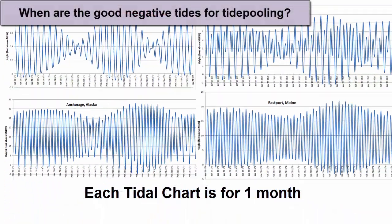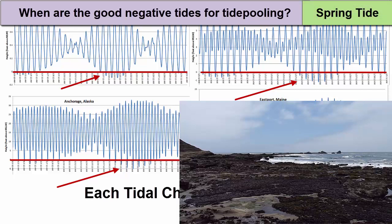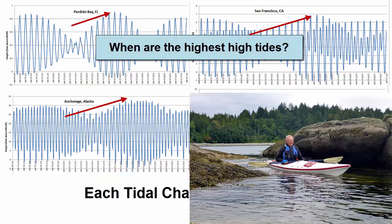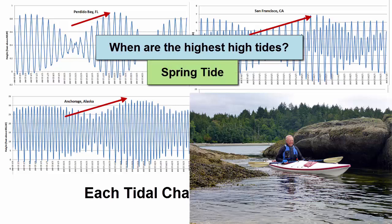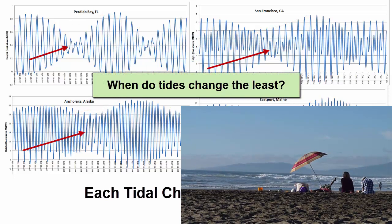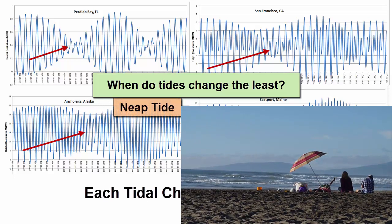At which time would you expect to get the negative tides that indicate really low water and good tide pooling? The spring tides. At which time would you expect water levels to be highest and thus the safest time to move boats through normally shallow waterways? Spring tides. At which time would you want to plan a beach picnic so you could minimize water level changes around your picnic site? Neap tides.